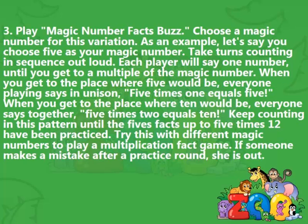3. Play Magic Number Facts Buzz. Choose a magic number for this variation. As an example, let's say you choose 5 as your magic number. Take turns counting in sequence out loud. Each player will say one number until you get to a multiple of the magic number. When you get to the place where 5 would be, everyone playing says in unison, 5 times 1 equals 5. When you get to the place where 10 would be, everyone says together, 5 times 2 equals 10. Keep counting in this pattern until the 5's facts up to 5 times 12 have been practiced.